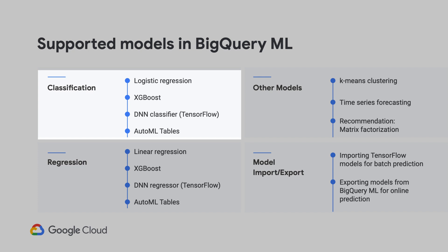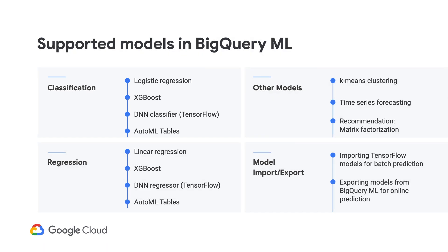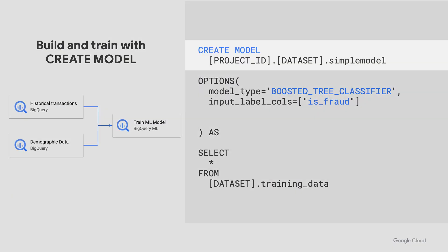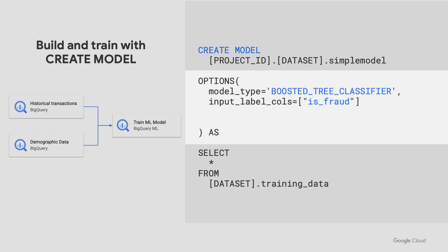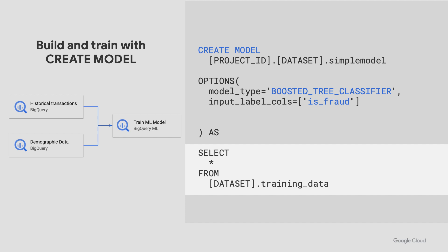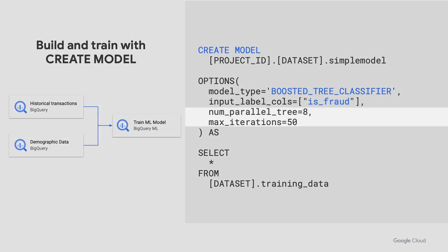While there are several classification algorithms available with BigQuery ML — like logistic regression, deep neural networks, and AutoML Tables — we find that XGBoost models work really well with minimal hyperparameter tuning required, making it easy to build good models quickly. In the CREATE MODEL statement, we give the model a name like 'simple_model', set the model type to boosted tree classifier for XGBoost, set the input label to is_fraud as the label of 0 or 1 to predict, and then select the training data. You can also adjust hyperparameters such as num_parallel_tree and max_iterations. We were able to train this model within just 10 minutes over 1.3 million rows and 10 features, with no need to set up extra infrastructure.